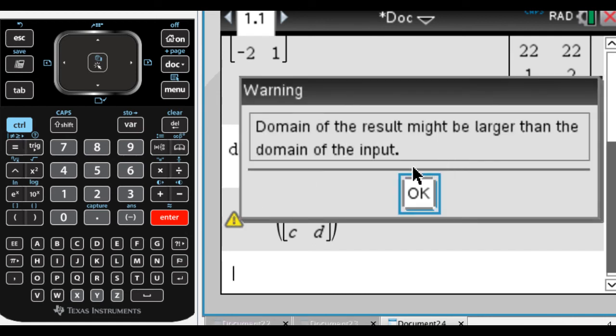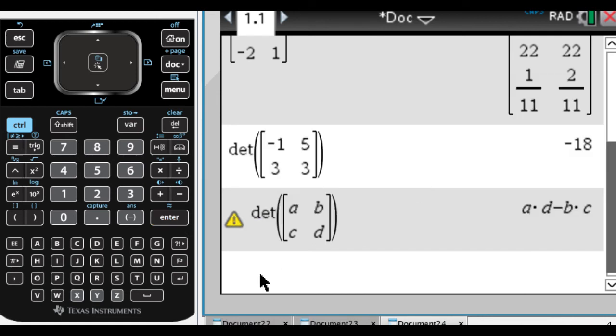'Domain of the result might be larger than the domain of the input.' I'm not really sure why it's saying that in this case. Usually it says that when it may or may not have divided by 0.